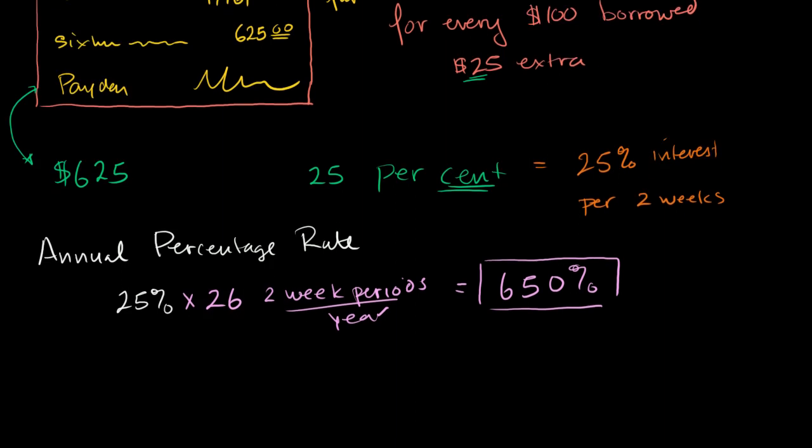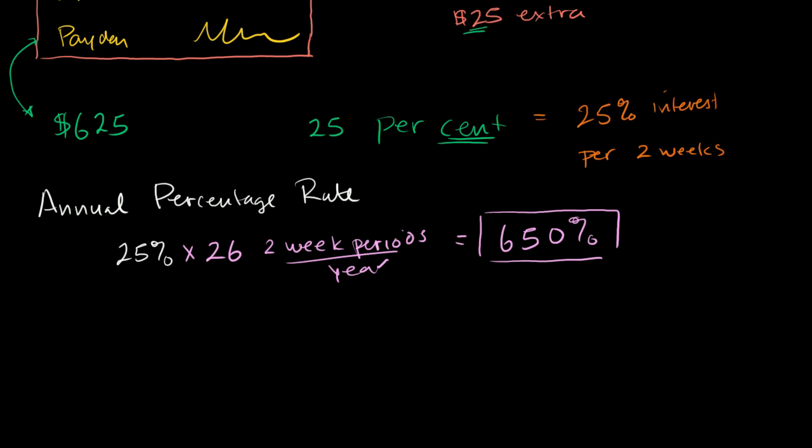This isn't the effective annual percentage rate or the actual mathematically correct one. To do that, we would actually have to take, and you might want to watch the video on this, if you were to let that just compound, and you can imagine if you're the payday lender, you are essentially getting that compounding if you keep lending your money out. And if you lend the interest you get from the last person, you lend that out at the same rate. To figure out that effective annual percentage rate, you do 1.25, 25% plus 1, to the 26th power. We have 26 of these periods in a year.